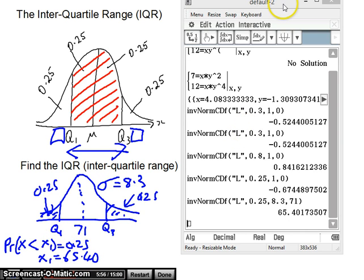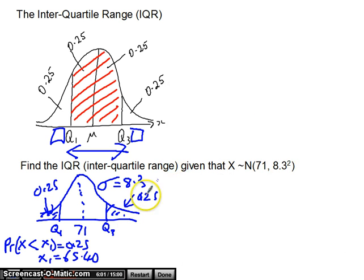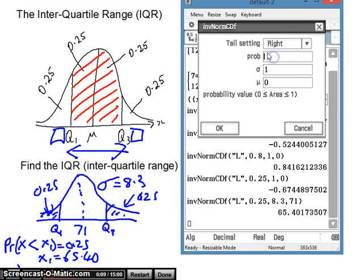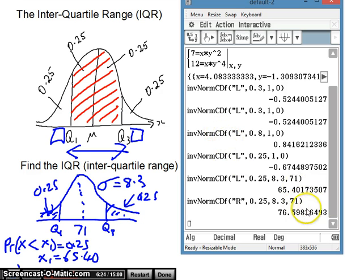So, it didn't specify what this was measuring, but it could be heights, weights, numbers of objects, could be anything. Q3 now, I'm going to find that one using the same process. This time, I'm going to go tail setting right, because the data's over there. I want 0.25 to the right. I still have 8.3. That's my standard deviation, and my mean is 71. So, here I get 76.598. So, 76.60, we'll say.